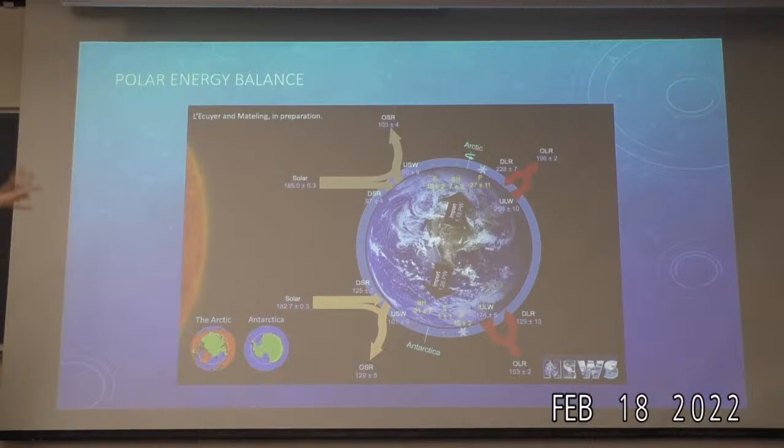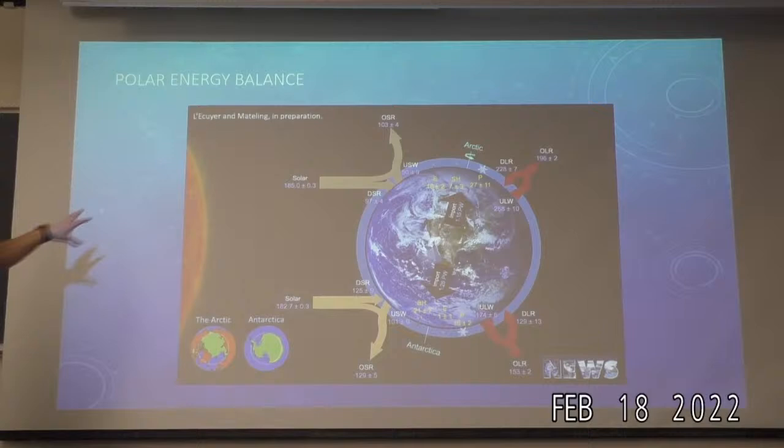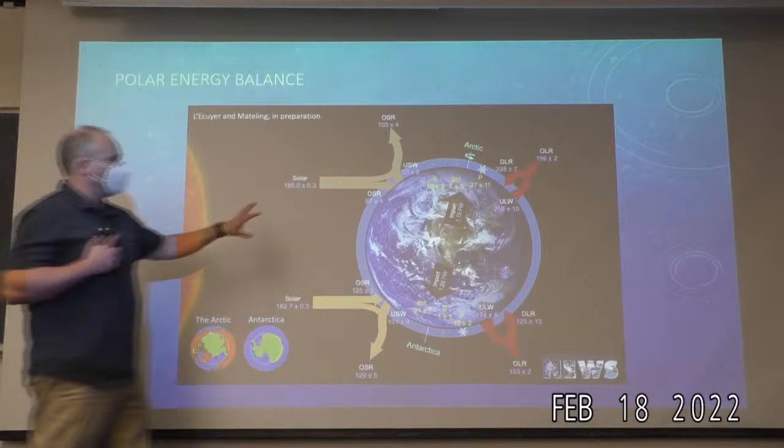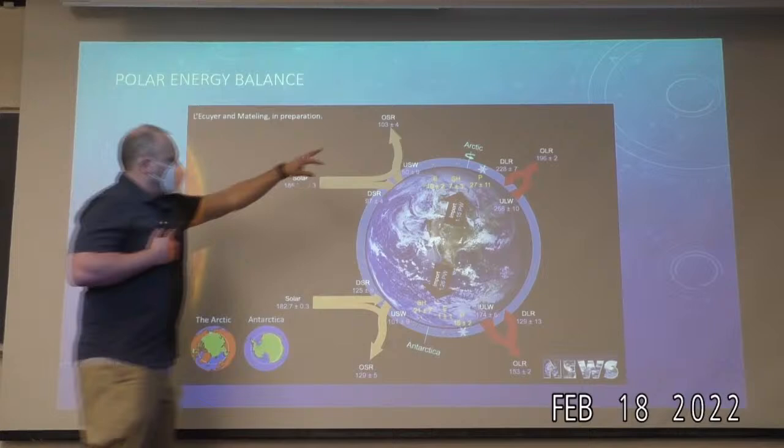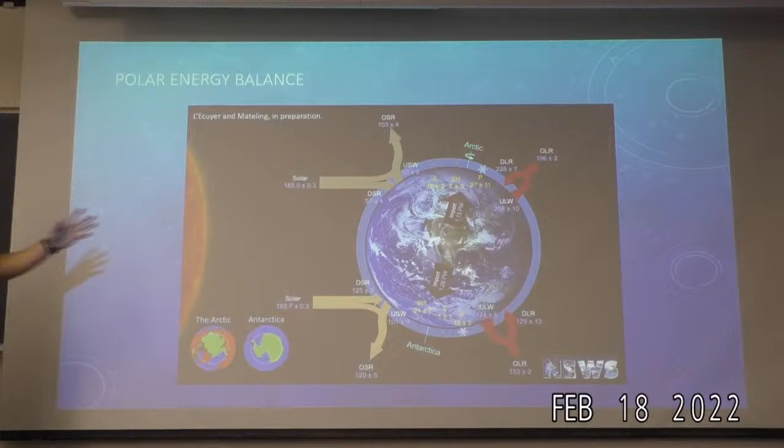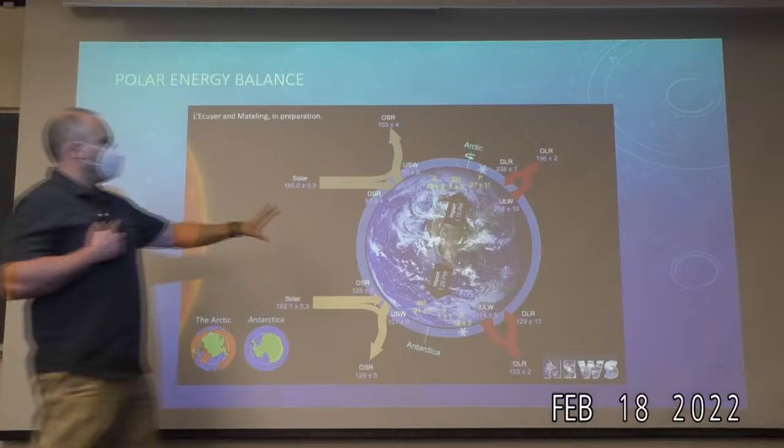I've also been part of the NASA Energy Water Cycle Study for many years, using satellite observations to understand the components of Earth's energy balance, showing polar energy budgets in the northern and southern hemispheres — the Arctic and Antarctic. This uses state-of-the-art satellite observations to provide benchmarks for evaluating climate models.